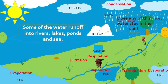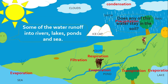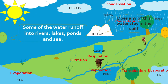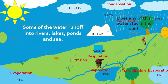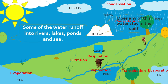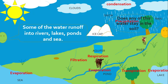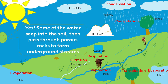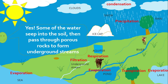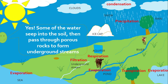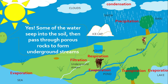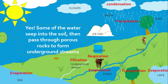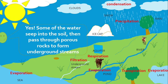Some of the water runs off into rivers, lakes, ponds, and the sea. Does any of this water stay in the soil? Yes. Some of the water seeps into the soil, then passes through porous rocks to form underground streams.